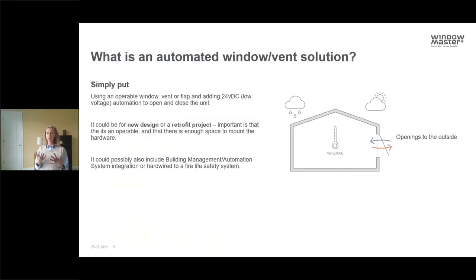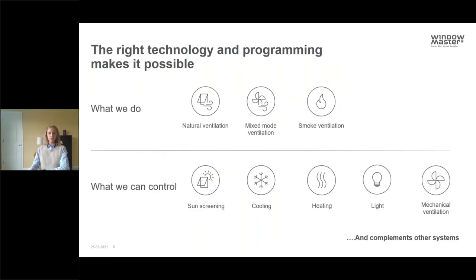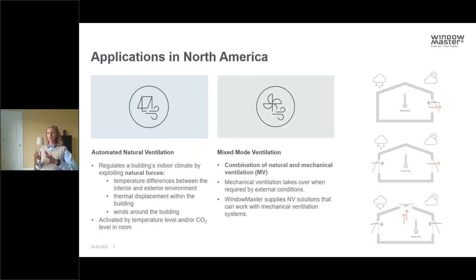A 24-volt window actuator is used to automate a window or vent solution — putting an actuator unit on an operable window or vent to automate the movement, meaning opening or closing. This can be done intelligently through BMS integration, through simple keypad operation, or through sophisticated millimeter controls with sensor inputs. WindowMaster uses these for natural ventilation, mixed mode ventilation, smoke ventilation, sunscreening, cooling, heating, lighting, and mechanical ventilation.